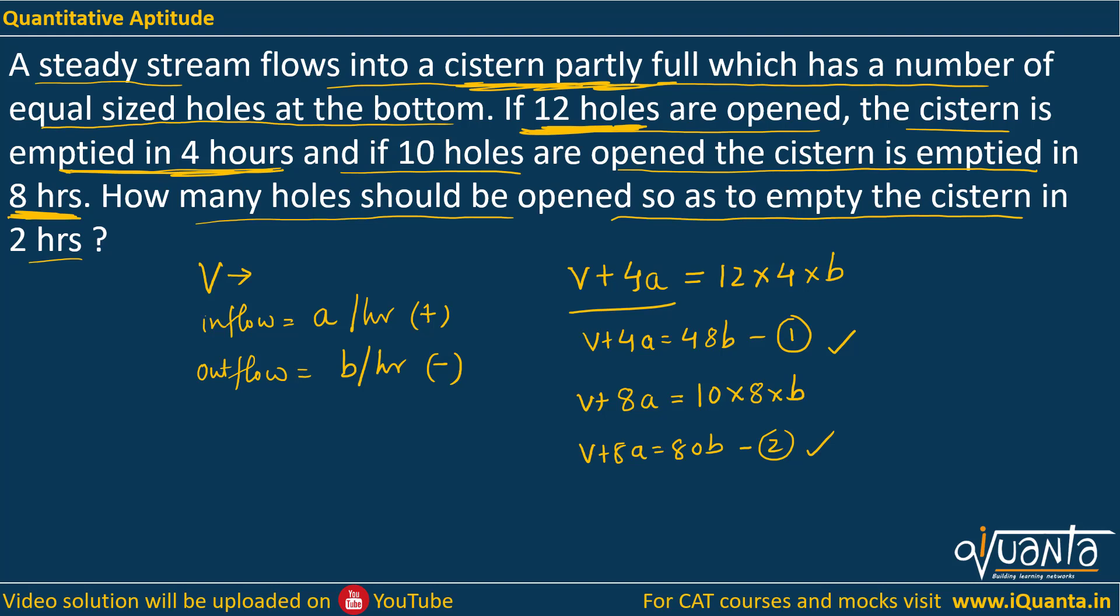Now I have these two equations with three variables involved: V, A, B. Let us see if we can solve them by dividing equation 1 by 2. V plus 4a upon V plus 8a equals 48 upon 80, which can be written as 3 by 5. If we further solve this we will be getting 2V equals 4a which gives me V equals 2a.